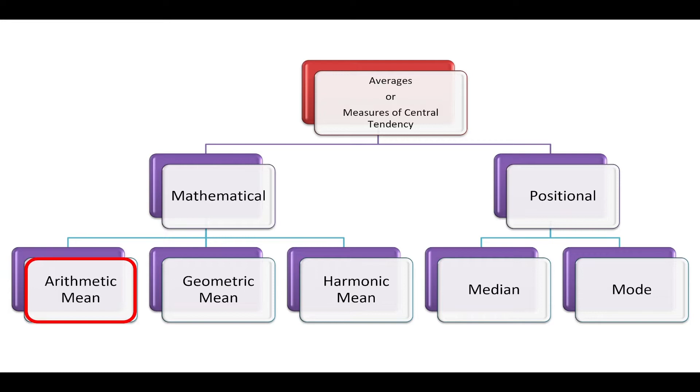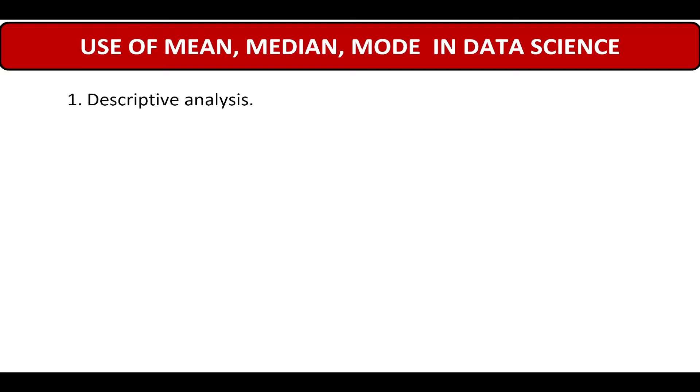Before starting with arithmetic mean, we should know that mean, median and mode are going to play a very important role in data science. Hence, I will highlight its importance before we move ahead. Firstly, it is used in descriptive analysis. What is descriptive analysis? Descriptive analysis means organizing and summarizing the data in a way that makes it easier to understand.